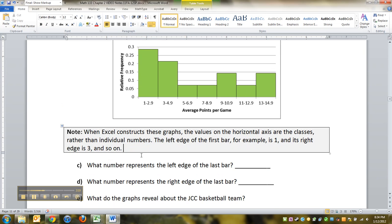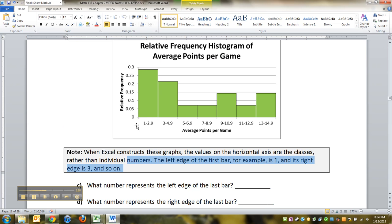Notice that when Excel constructs these graphs, the values on the horizontal axis are the classes rather than the individual numbers. The left edge of the first bar, for example, is one and its right edge is three. So what I'm talking about here is Excel is not very good about making the number line ticks matter. So what you have to know is that this bar right here, this is one right there, that tick mark. And over here, it's really three because it's the beginning of the next class. So 2.999999 forever is right before it. So this line right here is at three.